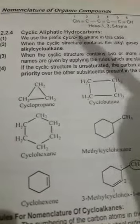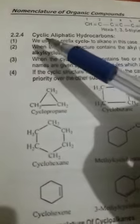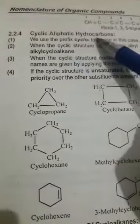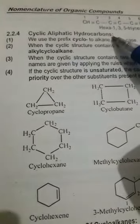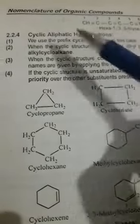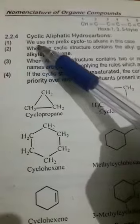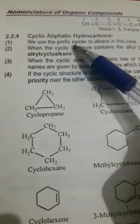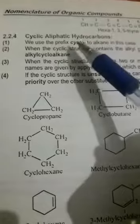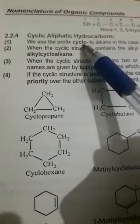Bismillahirrahmanirrahim, Assalamualaikum. Fourth year organic chemistry, chapter number two سے ہمارے پاس next topic ہے nomenclature of cyclic aliphatic hydrocarbons، جس میں nomenclature of cycloalkanes included ہے۔ Naming کے لئے rule number one: we use the prefix cyclo to the name of alkanes یعنی alkanes کے name سے پہلے ہم نے prefix cyclo use کرنا ہے۔